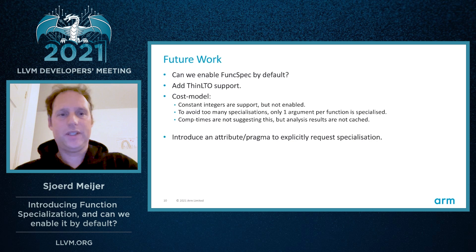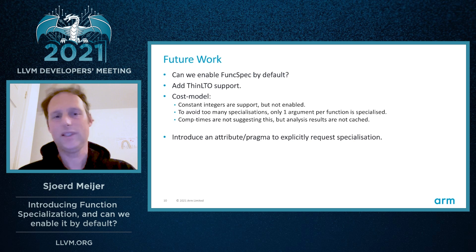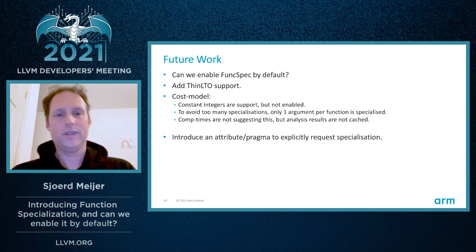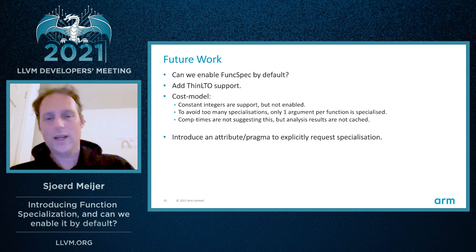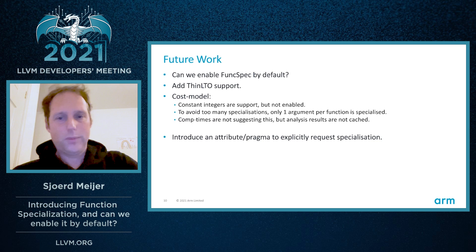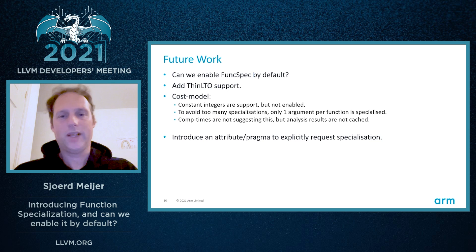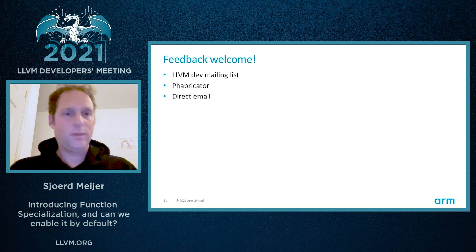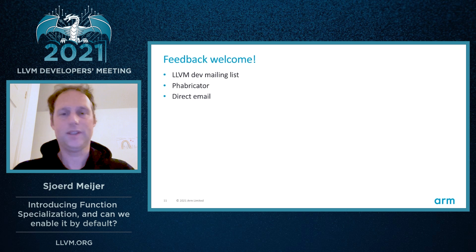For future work, we'd like to get parity with GCC — getting this enabled by default, which probably requires a little more work. Thin LTO is not yet supported, and the cost model remains very important. Constant integers are supported but not enabled by default. We only specialize one argument at a time and are not caching analysis results. One suggestion from the review process that I quite like is introducing an attribute or pragma to explicitly request specialization. Any feedback is welcome — please drop a message on the LLVM mailing list, Phabricator, or via direct email. Thank you very much.